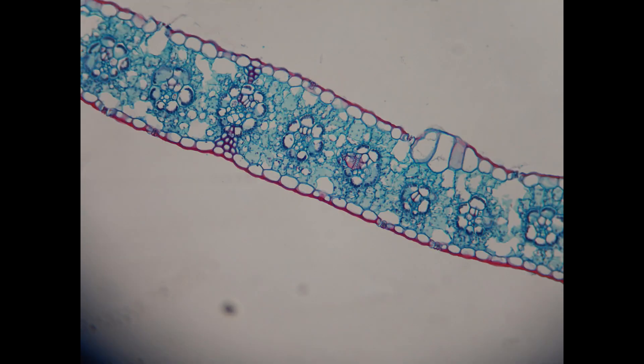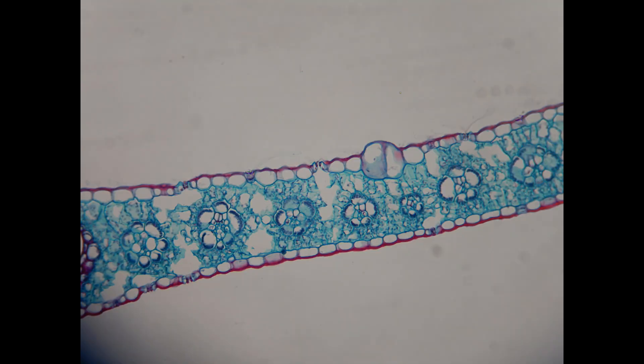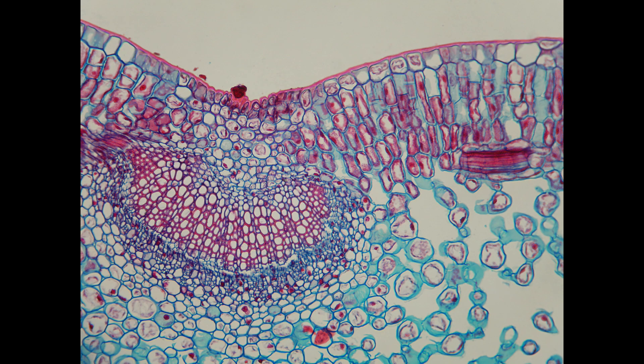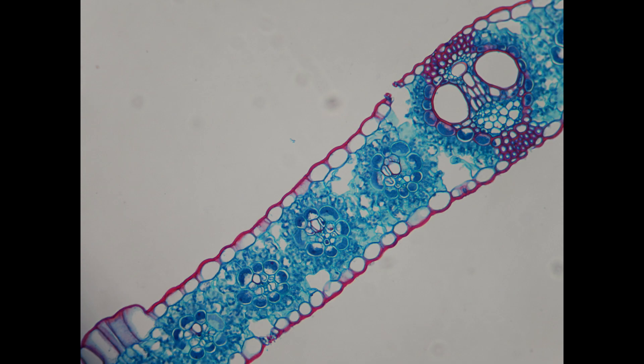In monocots, this is referred to as parallel venation, while in dicots, that branching pattern is referred to as reticulate venation. This is a difference in the leaves of monocots and dicots.